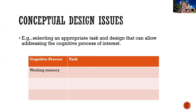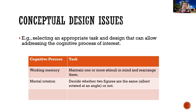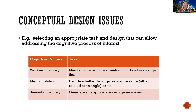For example, maybe you care about working memory, so you might create a task where somebody has to maintain information in mind and manipulate or rearrange it. Or maybe you're interested in mental rotation, presenting two figures and asking whether they are the same object just rotated or different objects. Or maybe you care about semantic memory, giving somebody a noun and asking them to generate an appropriate verb. These are conceptual issues relating to what we're interested in and how to get at it — and they're the same whether you're doing fMRI, behavioral experiments, EEG, or PET.